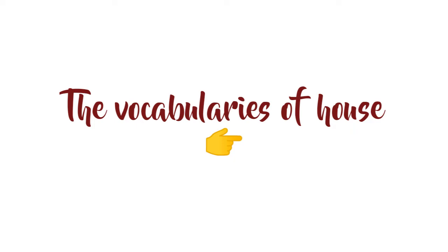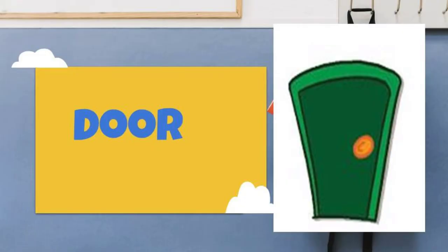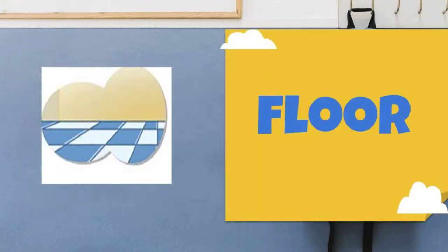These are some vocabularies of house. Berikut ini adalah beberapa kosa kata tentang rumah. Please listen carefully and repeat after me. Dengarkan baik-baik dan ikuti setelah saya. Door — pintu. It's a green door. Ini adalah pintu yang berwarna hijau. Floor — lantai.